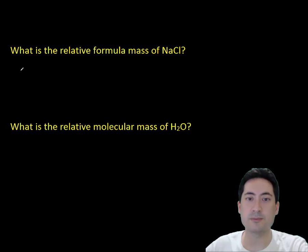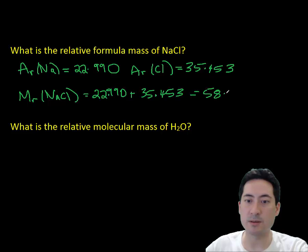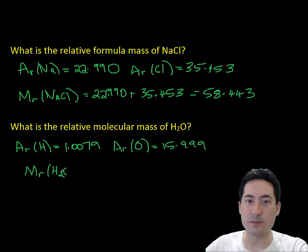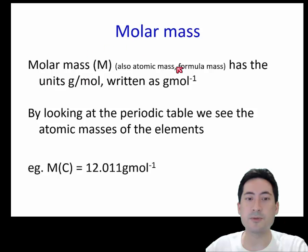So first example, what is the relative formula mass of sodium chloride? So you simply just go to your periodic table, you grab those numbers there, which are the average atomic mass of a range of isotopes that are normally found. And you add those together and you get 58.443. The same with H2O, two hydrogens, so you just times that by two and you get 18.